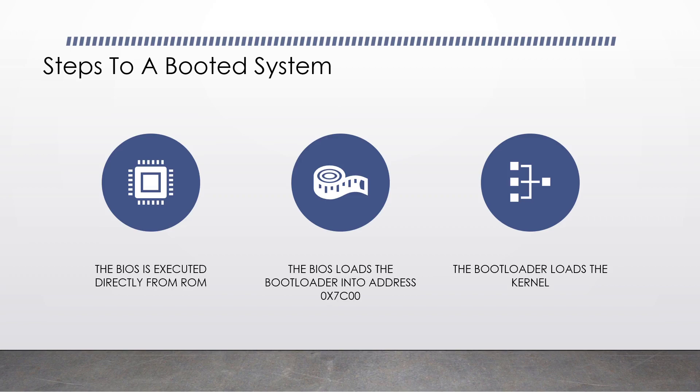The BIOS loads our operating system bootloader into address 0x7C00 — that's a hexadecimal number. The BIOS will then execute our bootloader, which will then load the kernel. And obviously our kernel would load all the other essential pieces of our operating system.